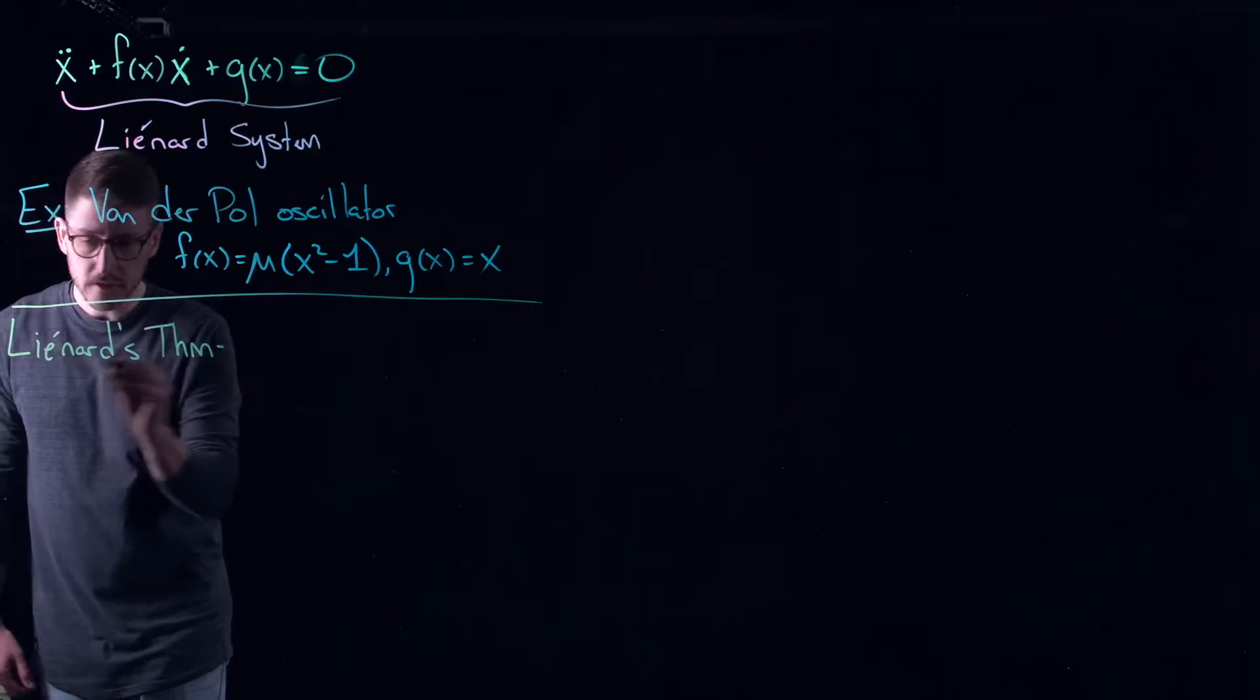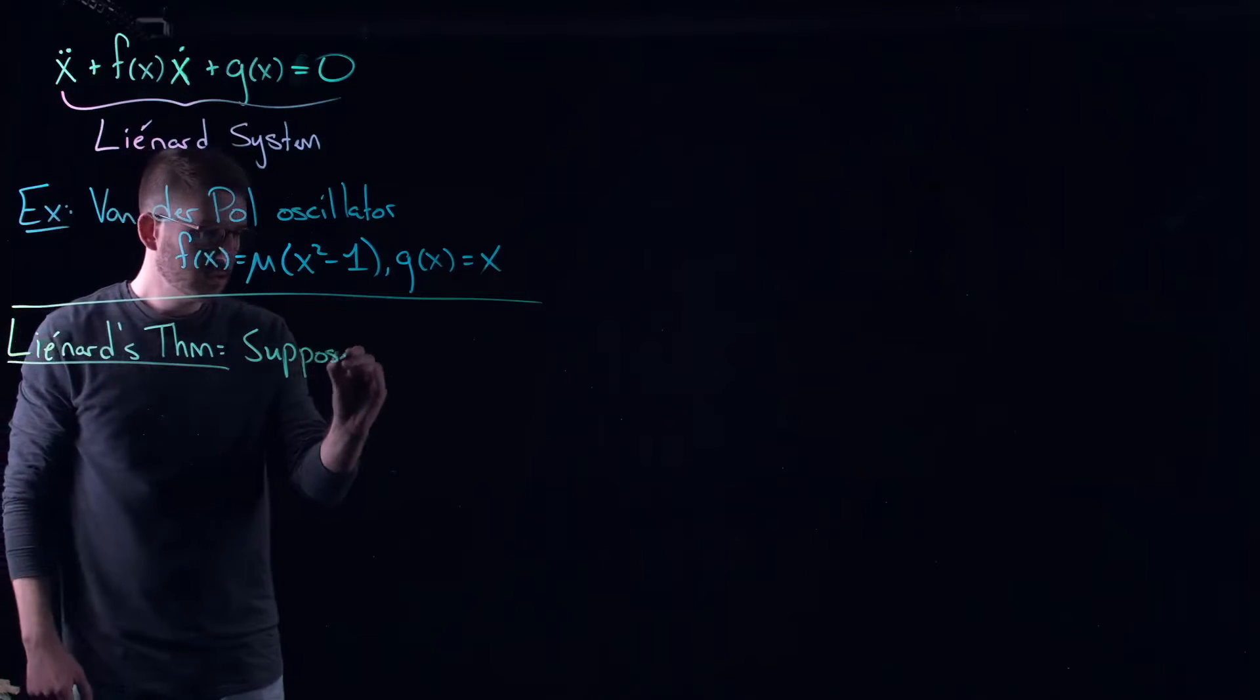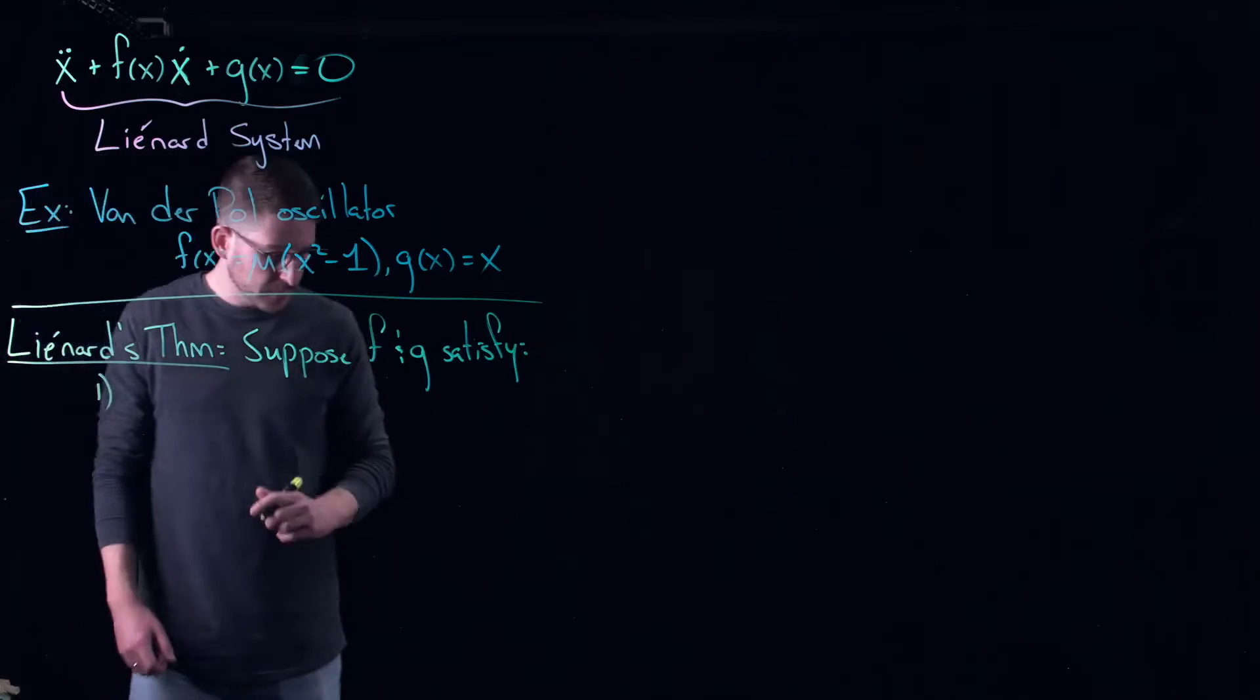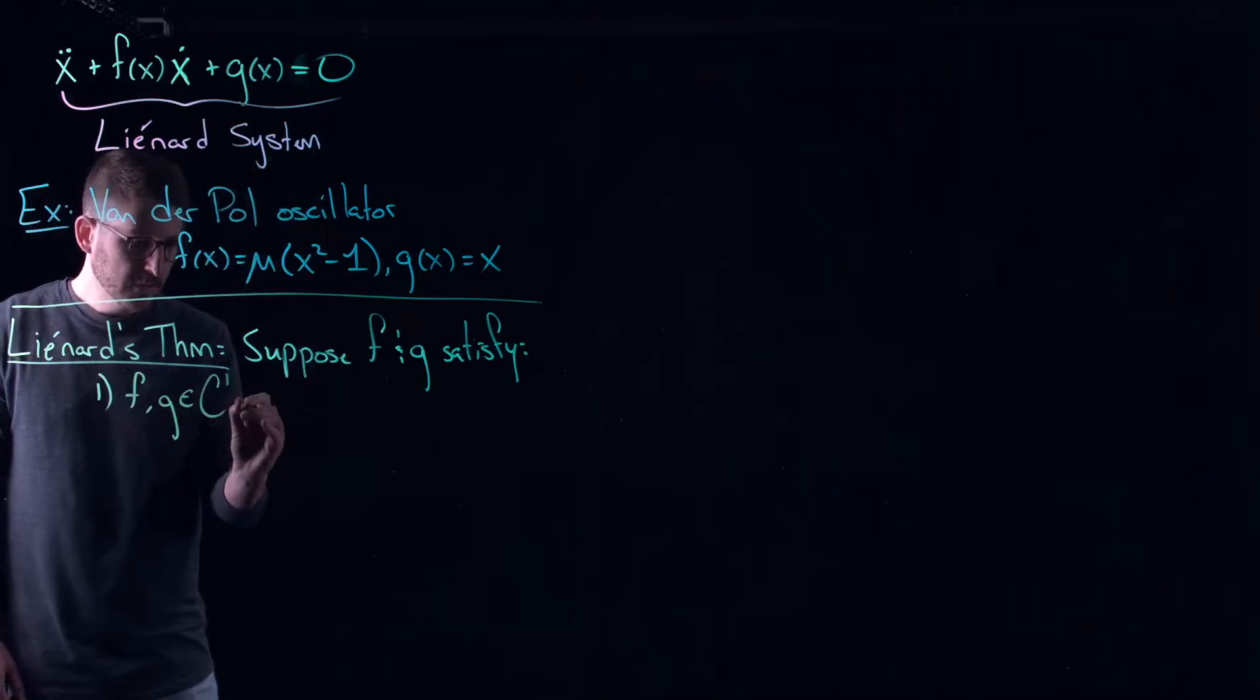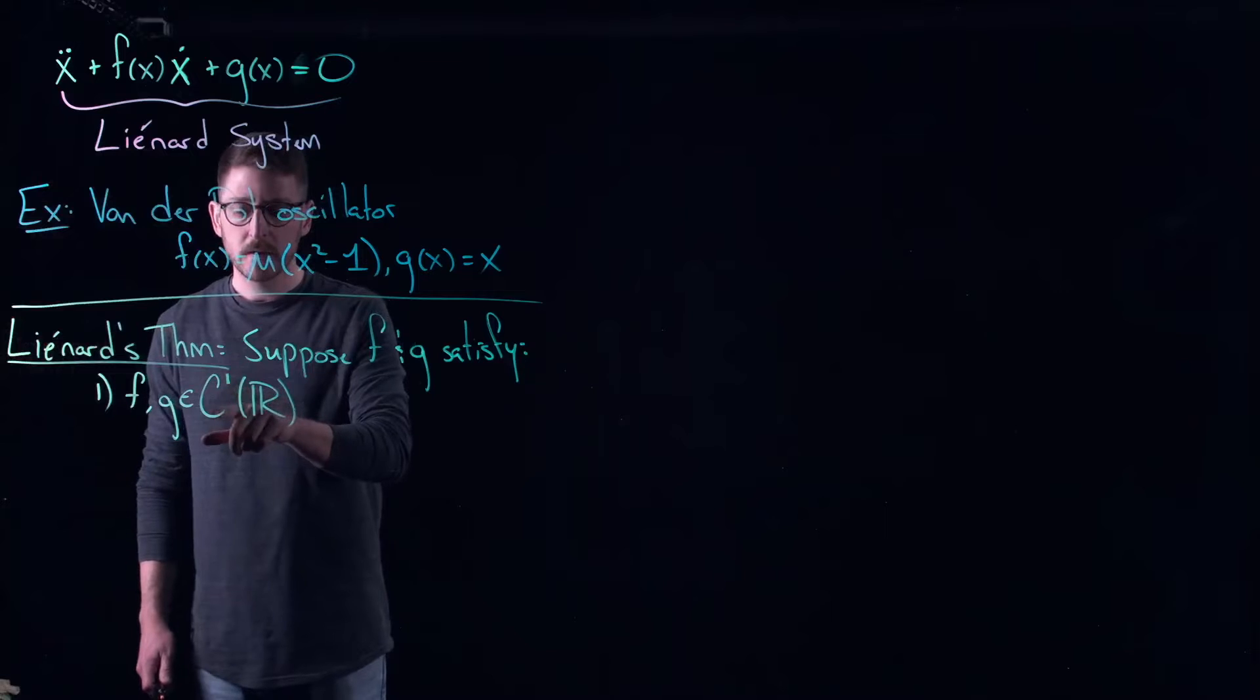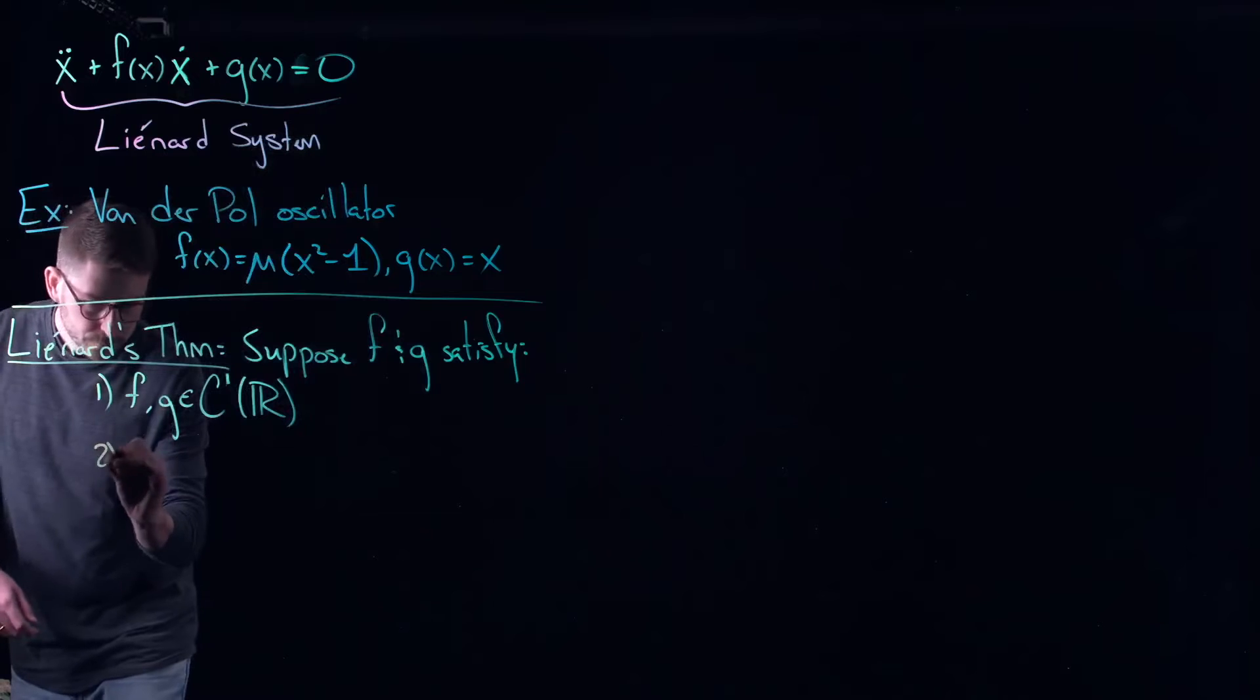Now Liénard's theorem is going to give us some criteria for when we can guarantee that there's going to actually be a periodic solution here. So suppose f and g satisfy, we've got a long list of things that we need them to satisfy. Most of them are pretty easy, there's one near the end that becomes a little bit more complicated. f and g are continuously differentiable, I'm going to write in C^1 of R. This might be a notation that you're not necessarily familiar with. C stands for continuous, C^1 means the function and its first derivative is continuous on the real numbers. So this just means these functions are smooth.